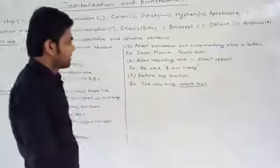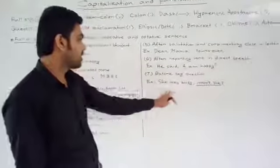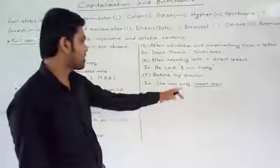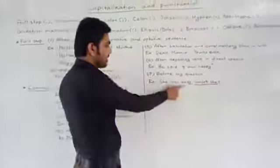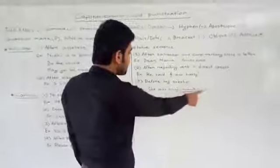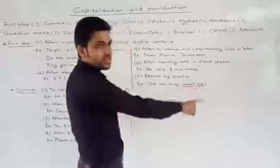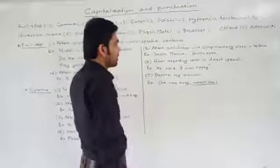Before tag question. We have to separate tag question using comma. Before tag question comma is used. She was busy, wasn't she. Here I have written comma after busy. And after busy, wasn't she. This is tag question. And we have to separate tag question using comma.